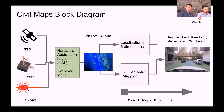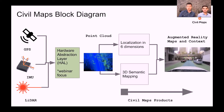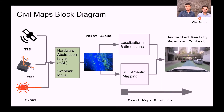So I will give a quick recap on the CivilMaps software stack. This is a block diagram — we mentioned this back in webinar one, so I won't go into details this time. The input to our systems is raw sensor data, like from GPS, from IMU, and from LiDAR, which are later registered into a point cloud through the HAL — the hardware abstraction layer — and the registration process. Later on, we use this point cloud to do our six-dimensional localization and 3D semantic mapping extraction, which gets translated into our products: augmented reality maps and context for autonomous driving vehicles.